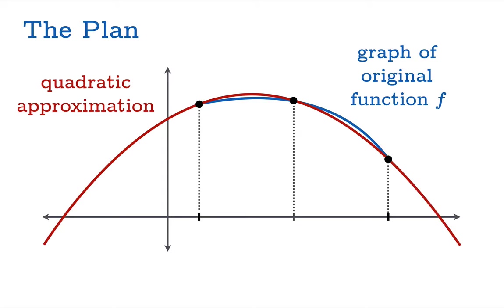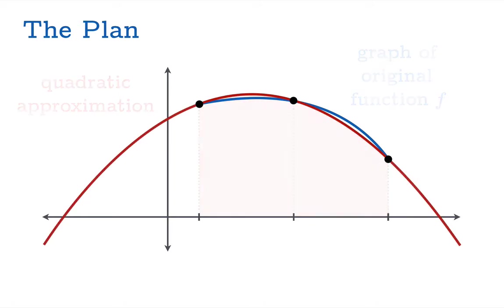Now it turns out under mild hypotheses, three points in the plane determine a unique parabola — we could go into the theory of this, but we really won't need it here. Once we have this parabola, we're going to be able to find the area underneath it very simply, because we can integrate quadratic functions easily, and hopefully that'll be a good approximation to the area.